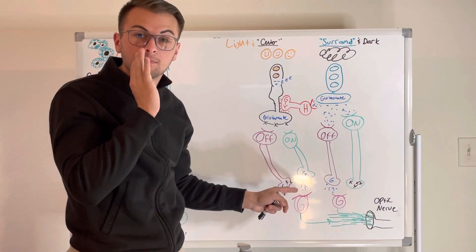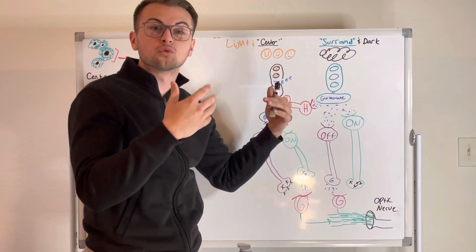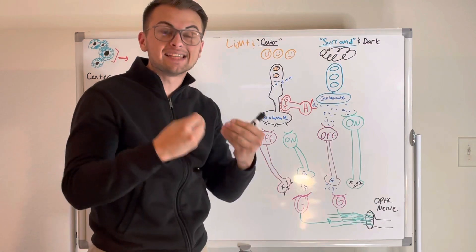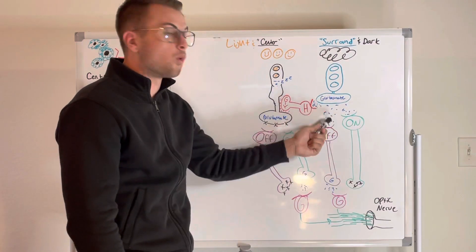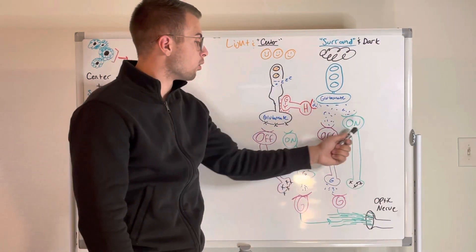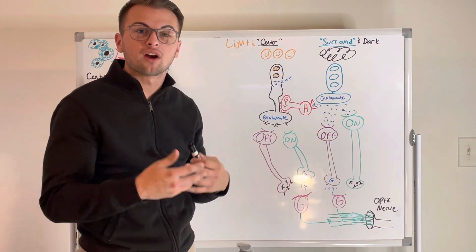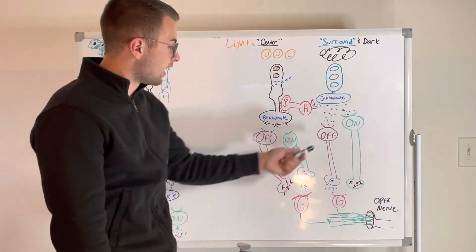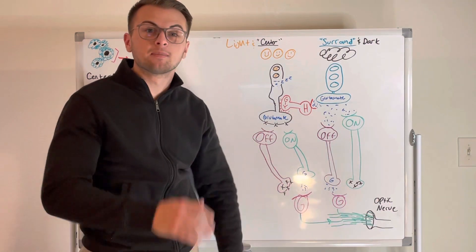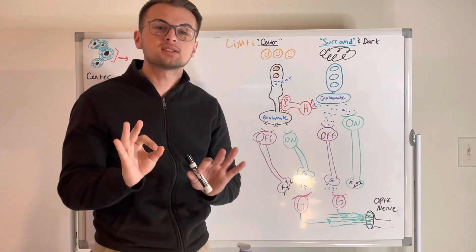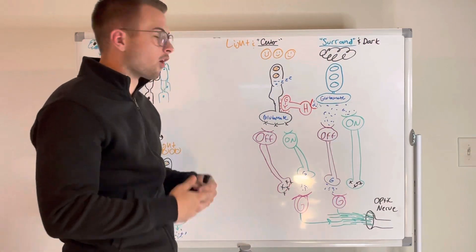At the same time, the photoreceptors in the dark surround become depolarized, releasing more glutamate onto our bipolar and horizontal cells. The off-center bipolar cells are activated by glutamate and tell the ganglion cell that it is dark in the surround. We must not forget our augmenters — the horizontal cells — which in this case are connected to the surround.